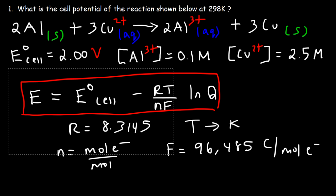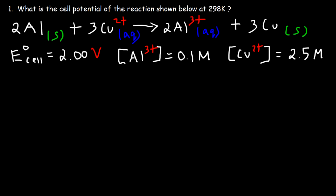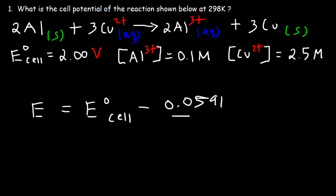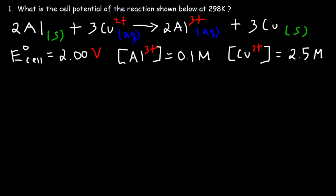If the temperature is at 25 degrees Celsius, you can use either that equation or a simplified version: the non-standard cell potential equals the standard cell potential minus 0.0591 divided by N times log Q. Q is the reaction quotient — it's the ratio of the products to the reactants.